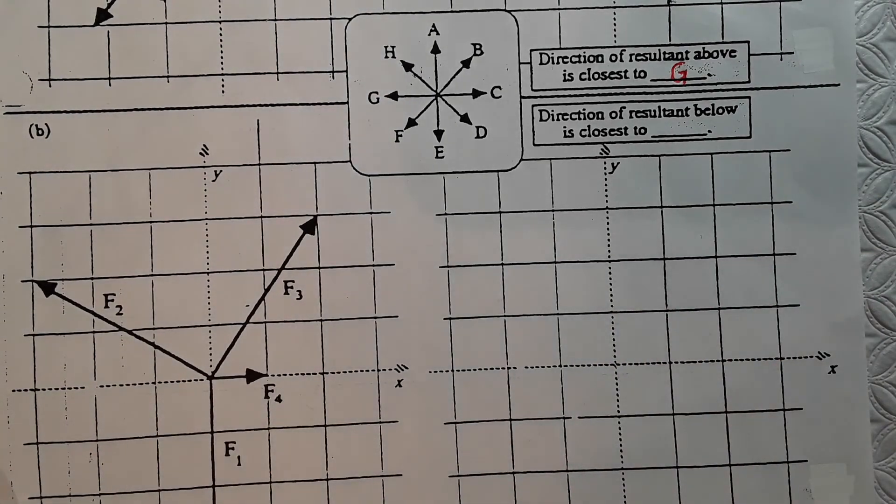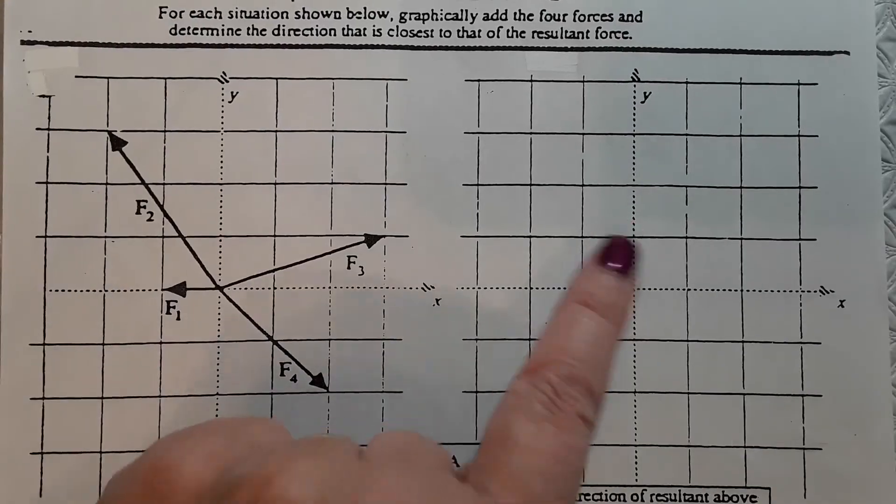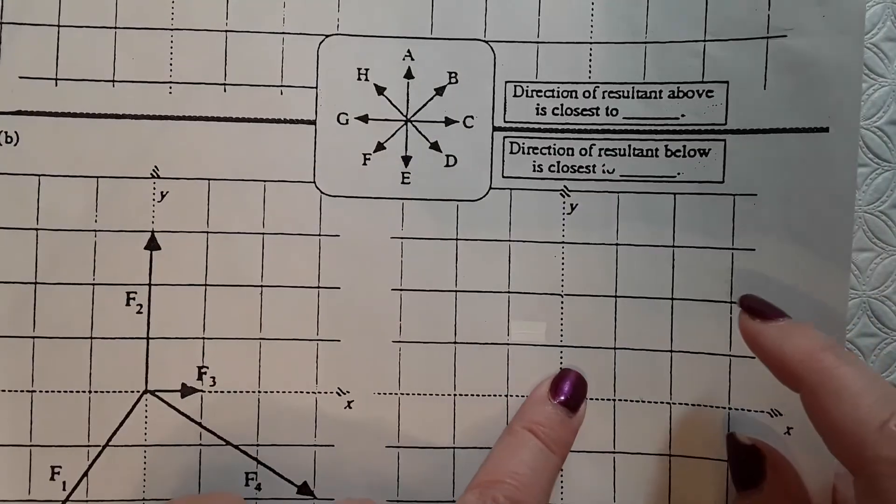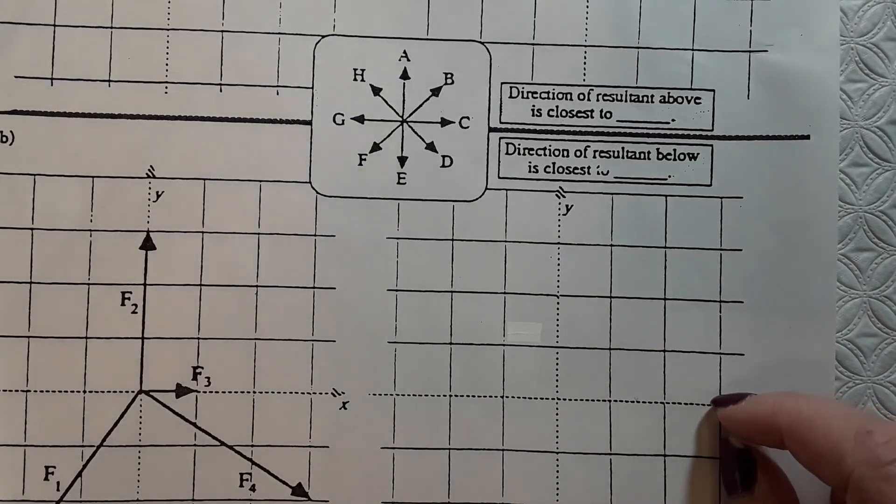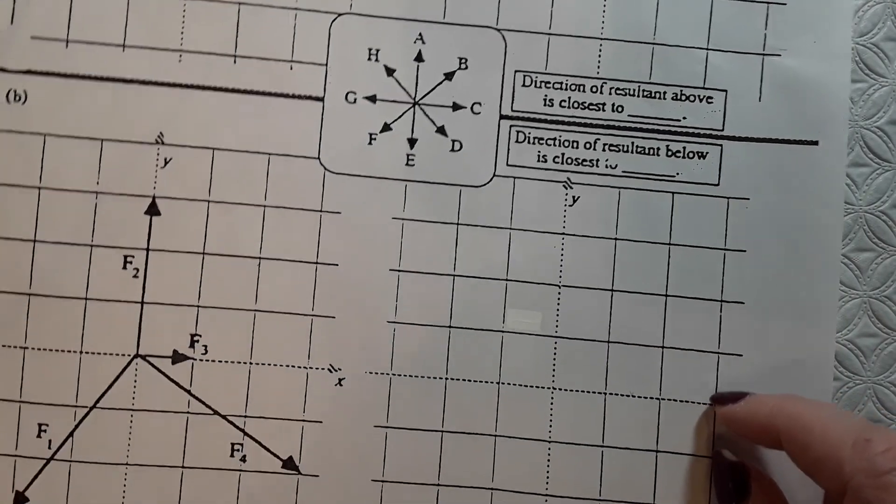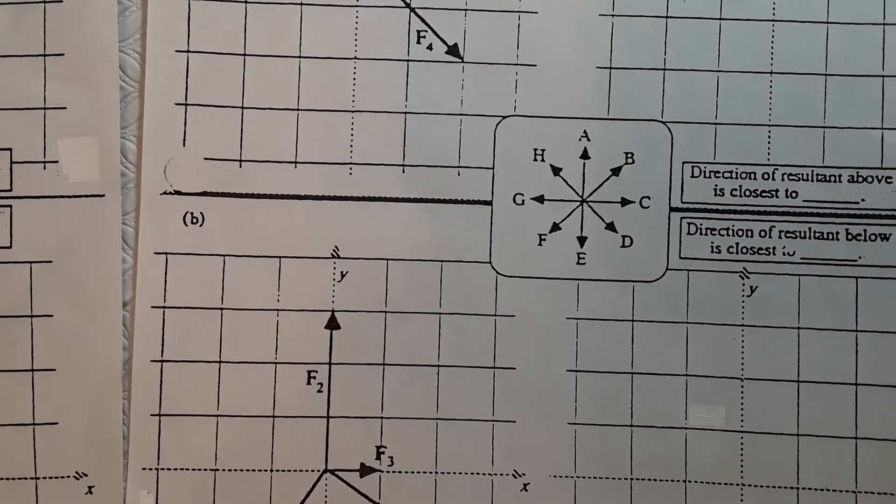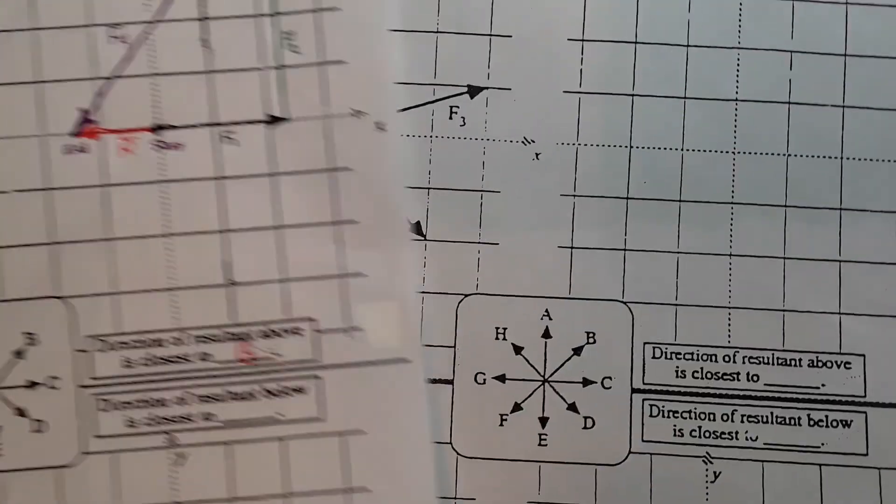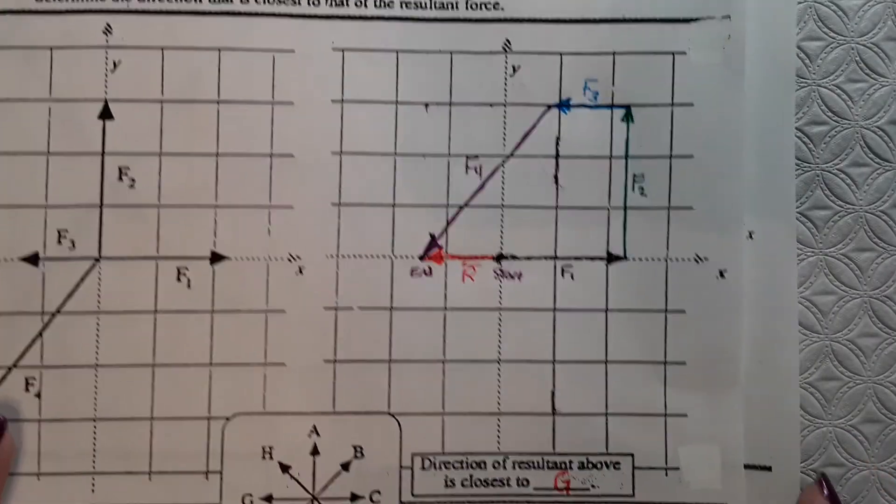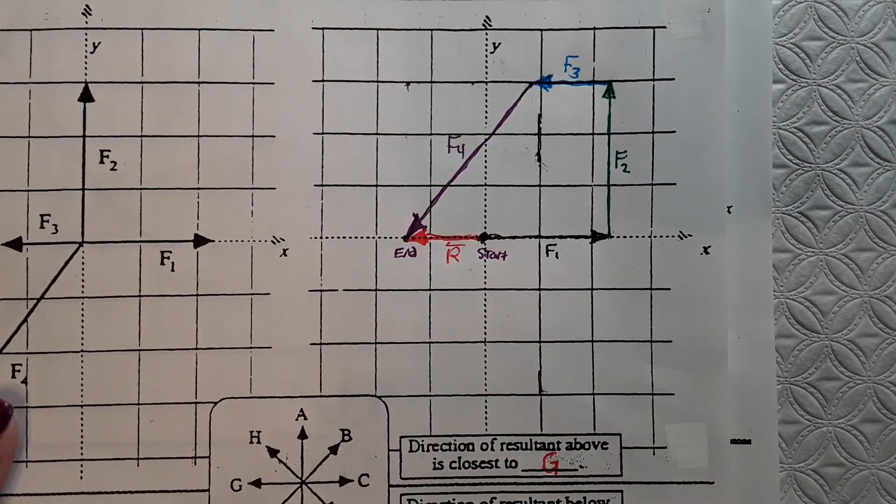So, you've got three more of these to do on these two pages. The bottom one here, and then page two, you have one on the top, and one on the bottom. And don't forget to answer the direction question for the resultant. So, you have five vectors to draw on each one. The four that you're going to add tip to tail, and then the resultant. Have fun with it. Bye-bye.